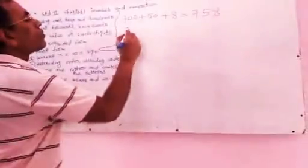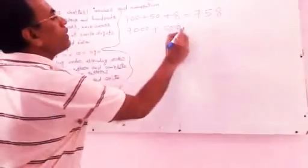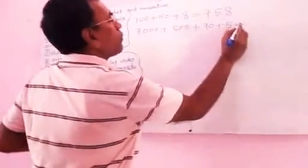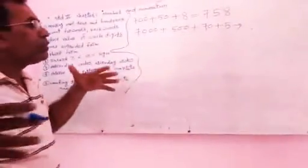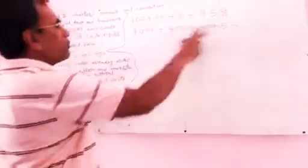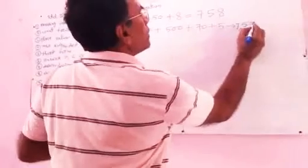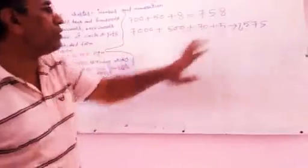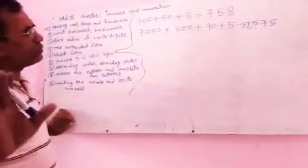Another number: 7,000 plus 500 plus 5. The question is to write it in short form. Short form means you add all together: 7,000 plus 500 plus 5 equals 7,505. This is the short form.